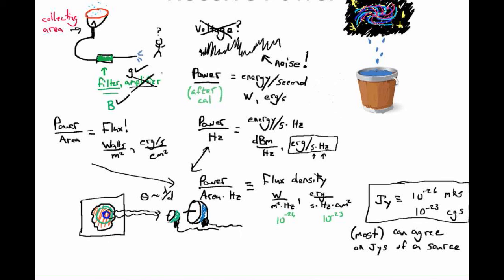Now we have two competing effects. The blue telescope is bigger, so it collects more photons — for a given flux, it has more area and therefore collects more power. So the blue telescope collects more power because it has a bigger area.